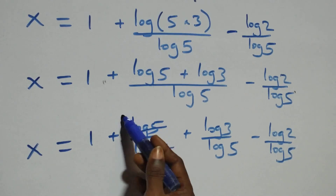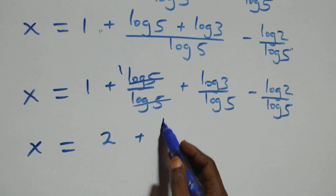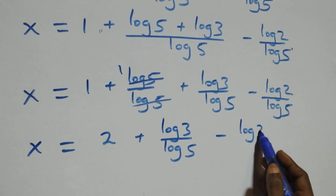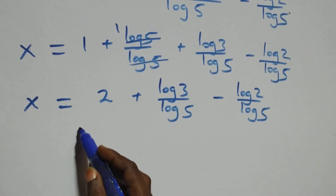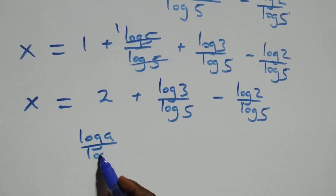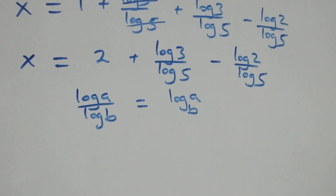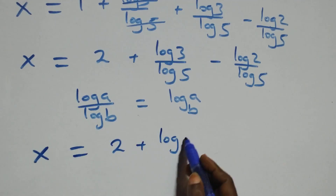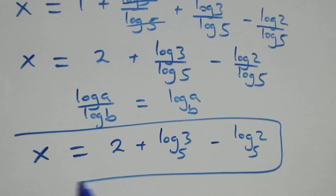Applying the change of base formula, where log a over log b equals log base b of a, log 5 over log 5 equals 1. So we have x equals 2 plus log base 5 of 3 minus log base 5 of 2. This is the value of x.